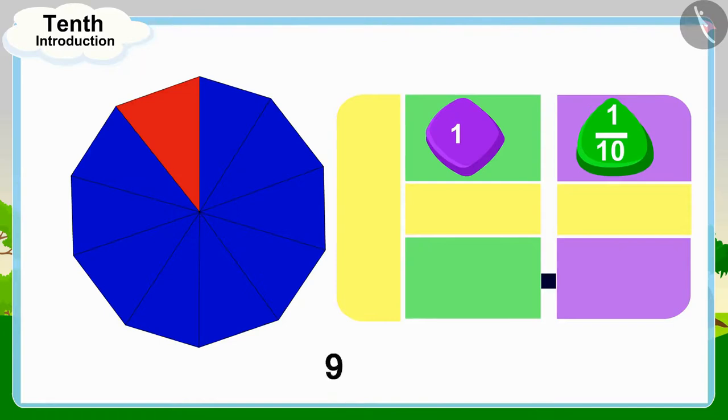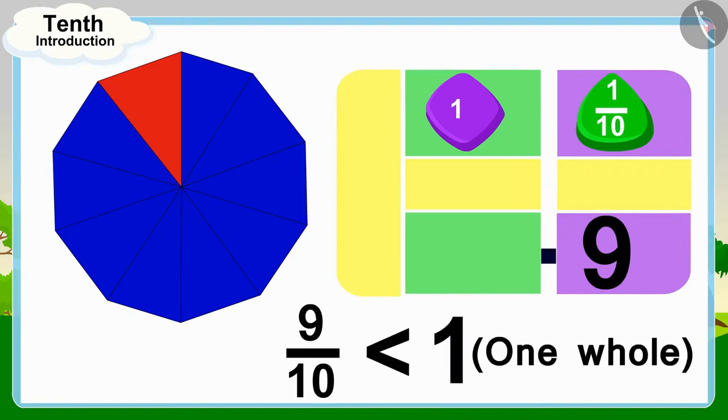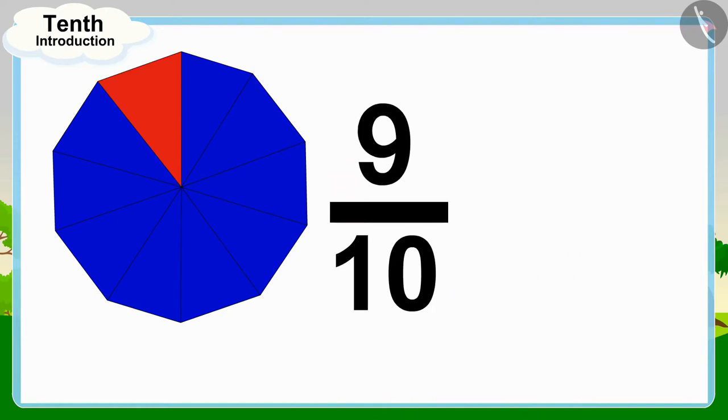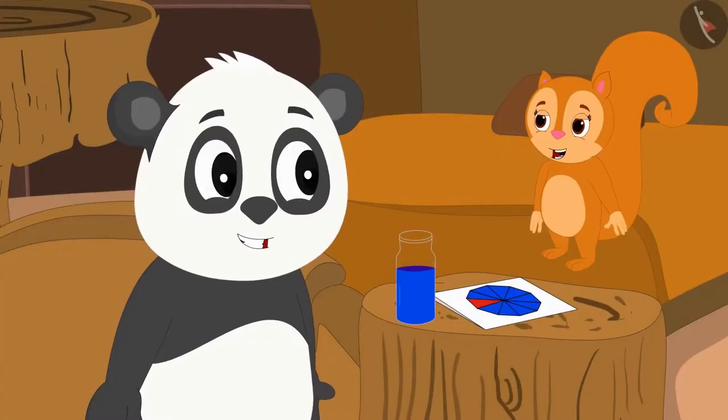Therefore, we will write the number 9 after the decimal point. And because 9 tenth is less than 1 whole, we will write 0 in the unit's place before the decimal point. In this way, Golu has filled blue color in 9 tenths or 0.9 parts of the flower.